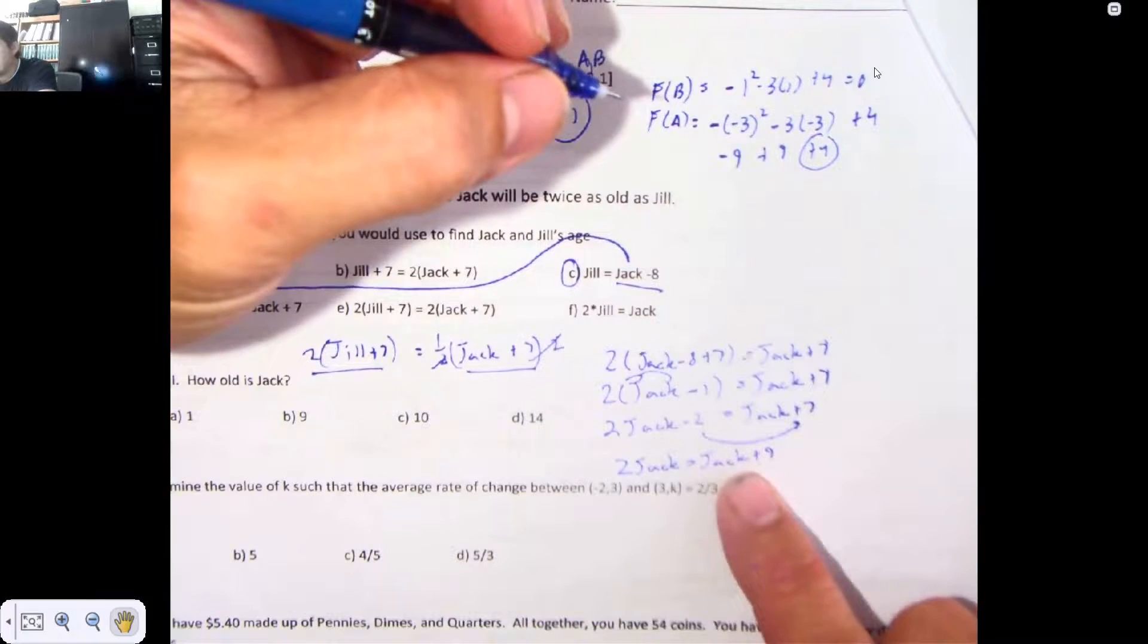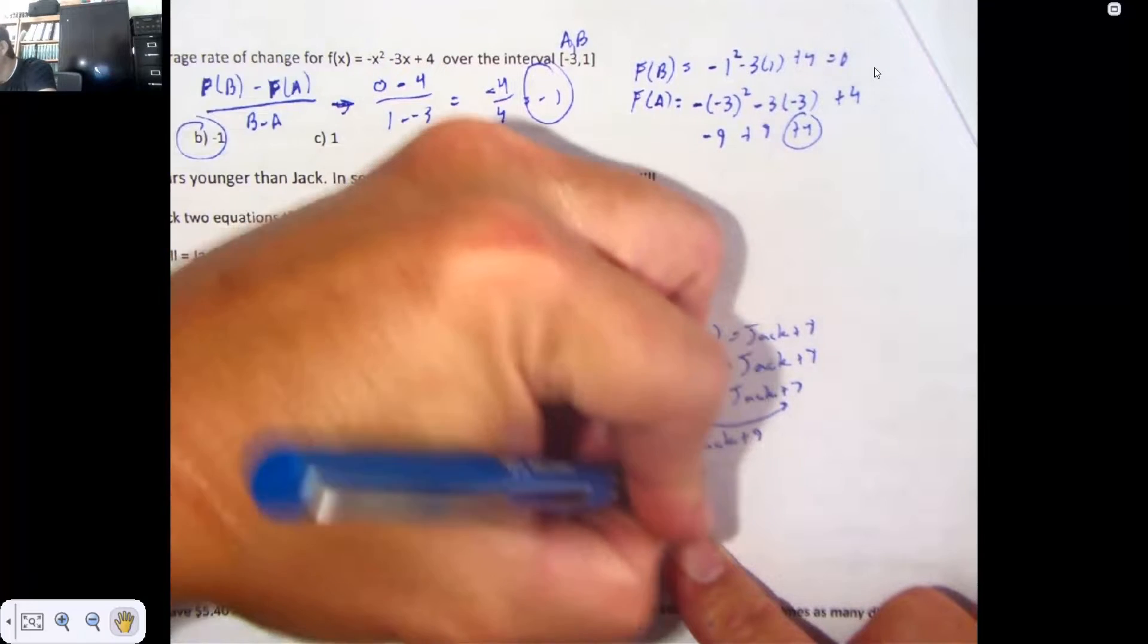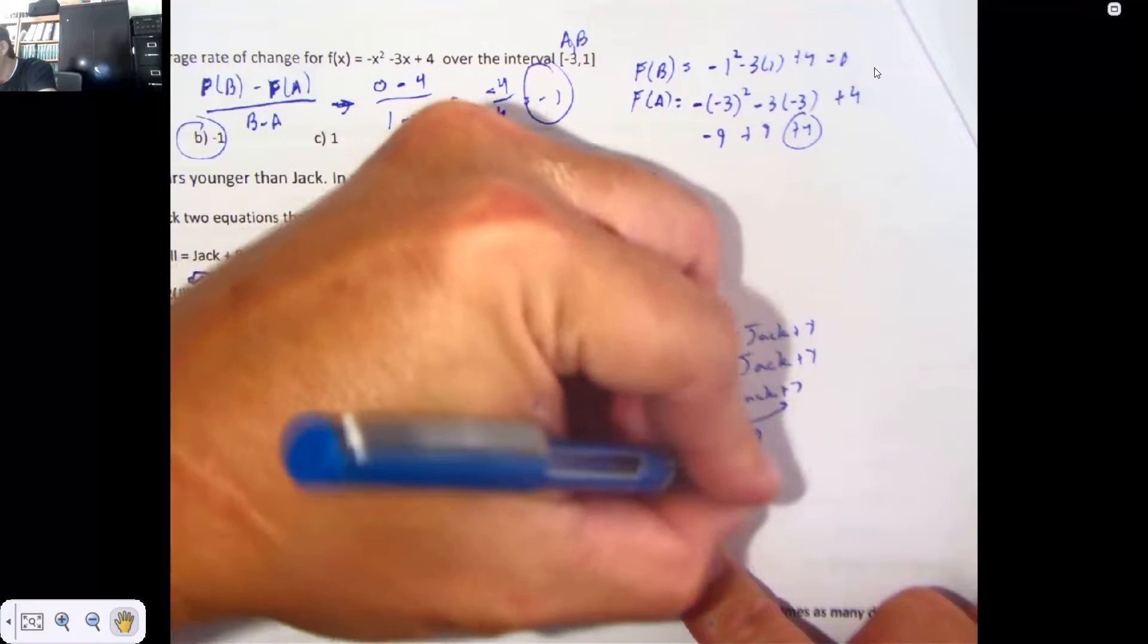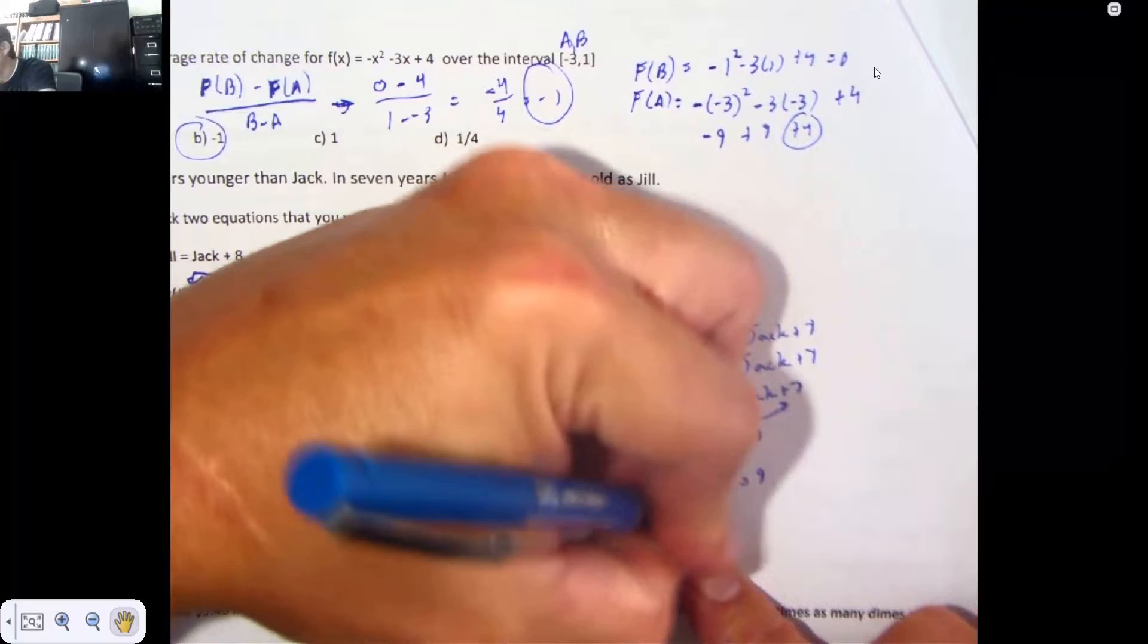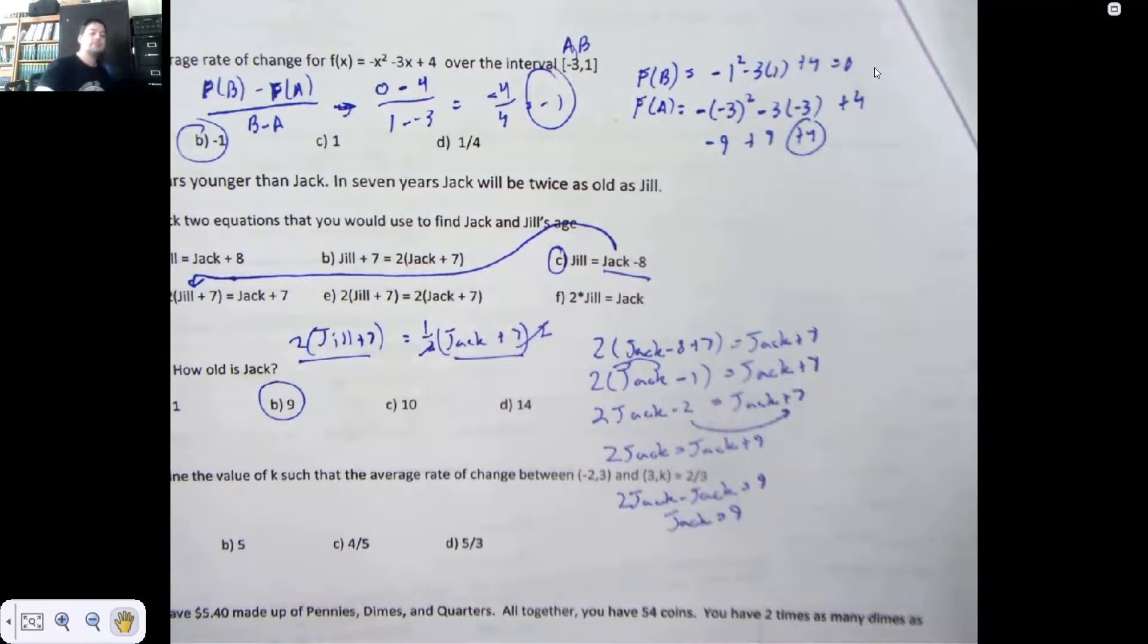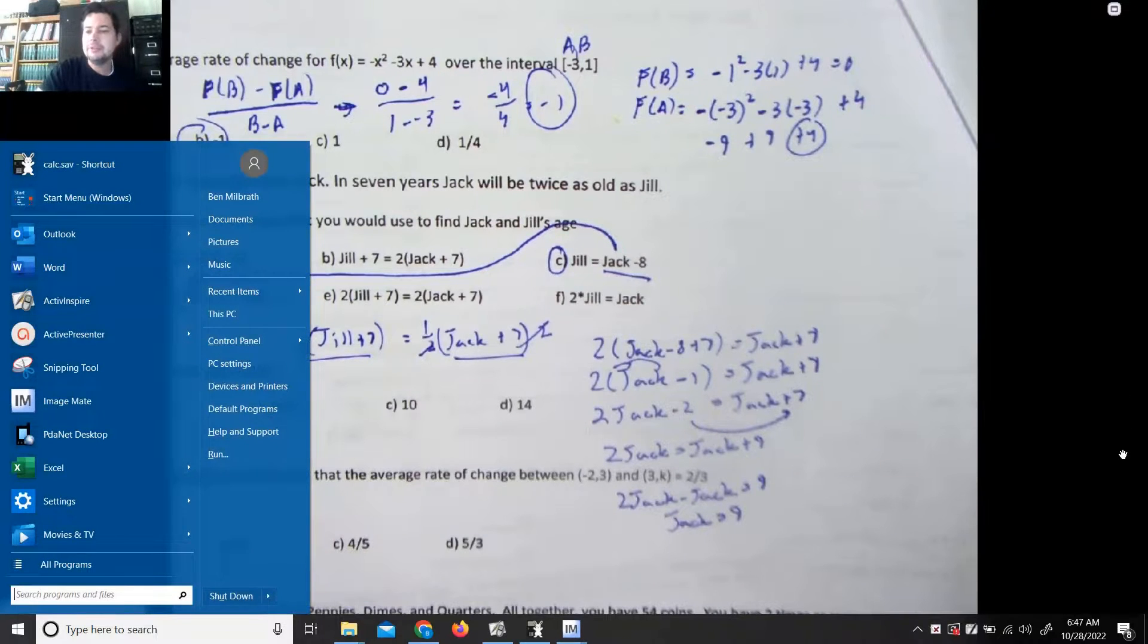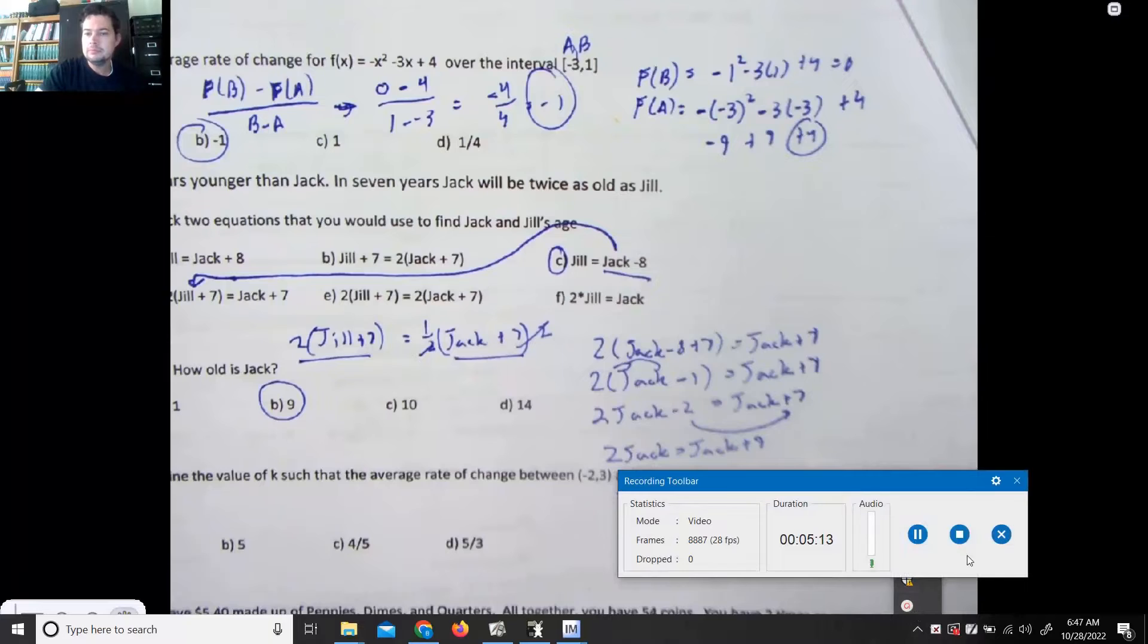And now you're going to subtract Jack from 9. So 2 Jack, take away a Jack, is 9. And 2 Jacks, take away another Jack, has to be Jack. Jack is 9 years old. Anyways, there's 1 and 2. Come back and do the rest of it here in just a moment.